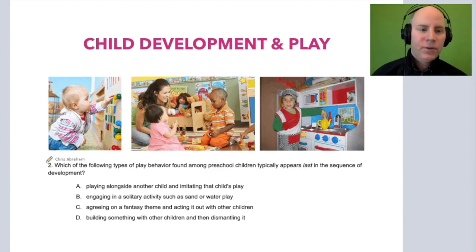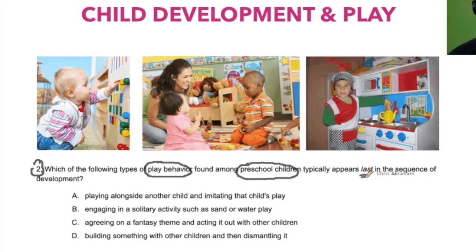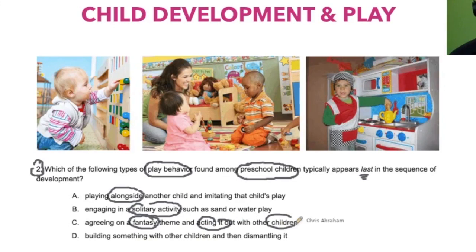Let's look at the question. Number two: which of the following types of play behavior found among preschool children typically appears last in the sequence of development? We're looking for the most advanced play skill. A: playing alongside another child and imitating the child's play. B: engaging in solitary activities such as sand or water play. C: agreeing on a fantasy theme and acting it out with other children. And D: building something with other children and then dismantling it.